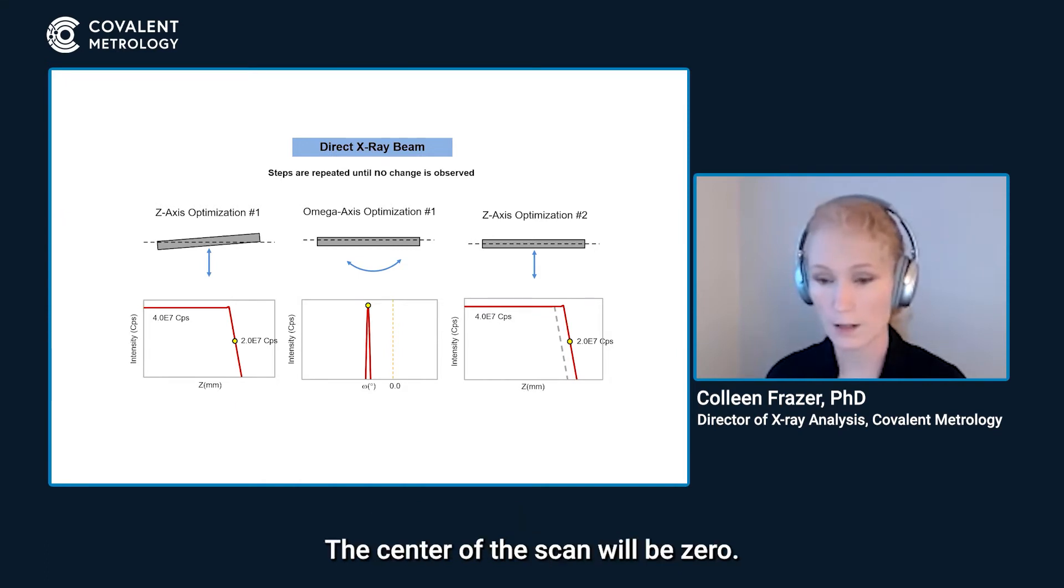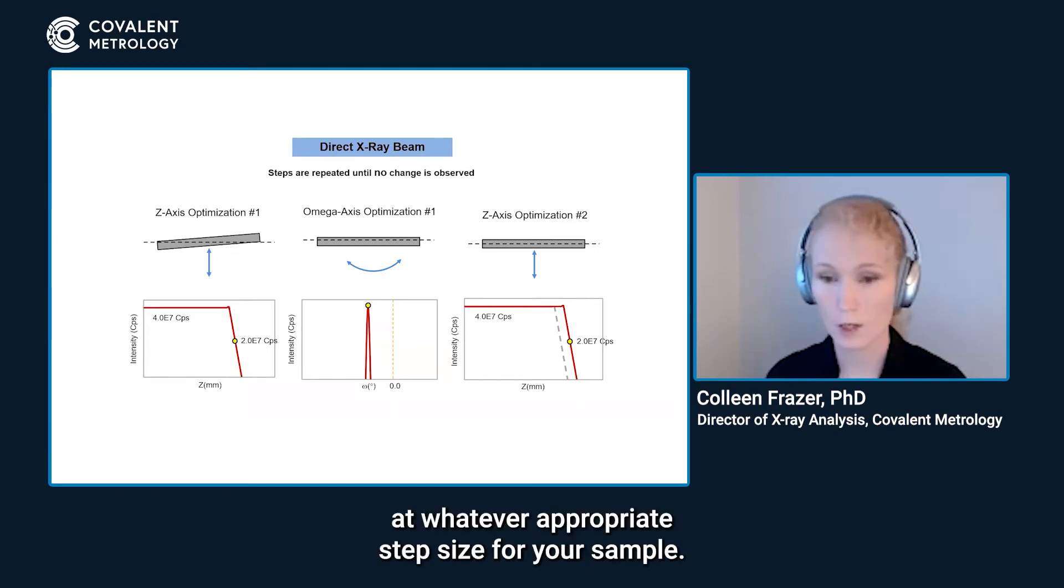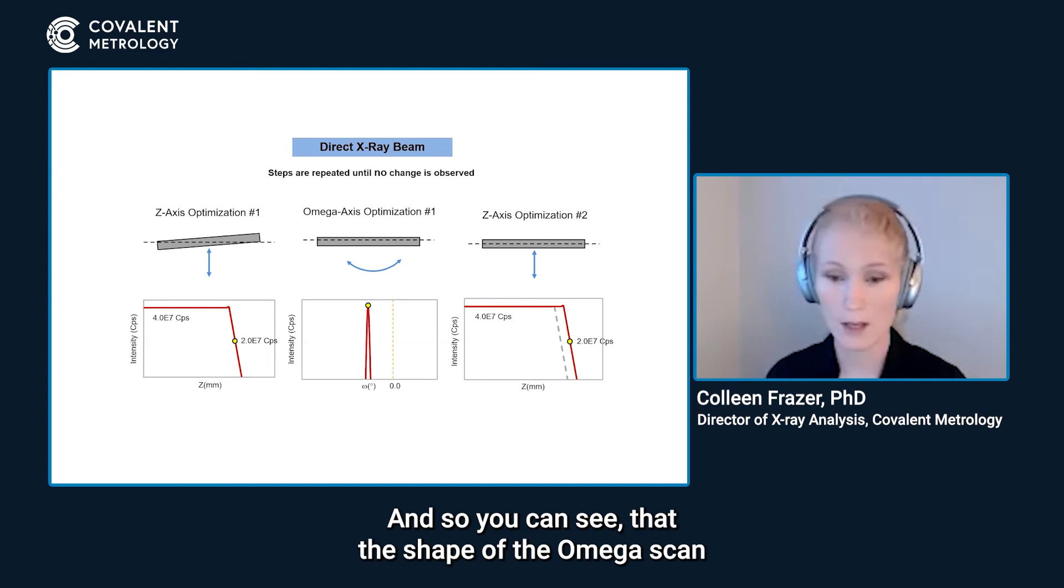The center of the scan will be zero, rock omega at whatever appropriate step size for your sample and you can see the plot that we have here. We find the maximum intensity and then we use offsets to move that to zero in this case. This particular sample was very flat, not a lot of curvature to it and so you can see that the shape of the omega scan is very sharp and fairly narrow.